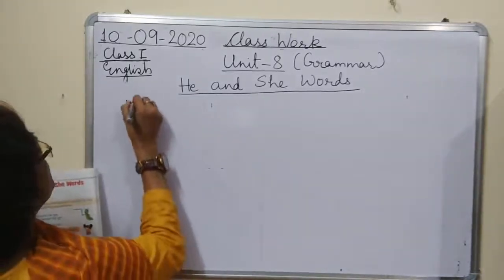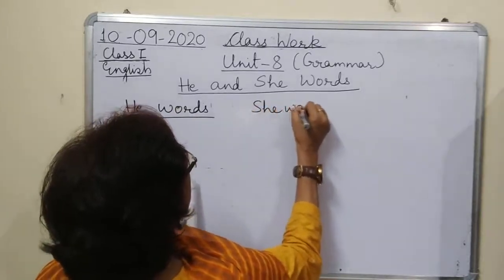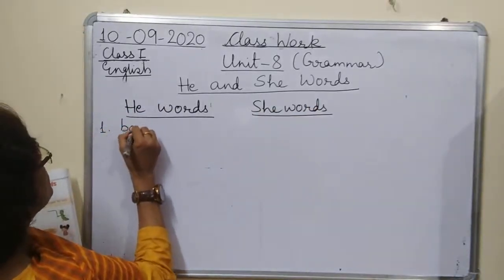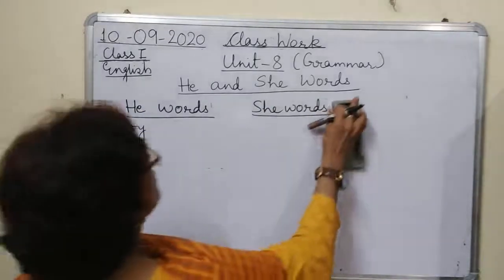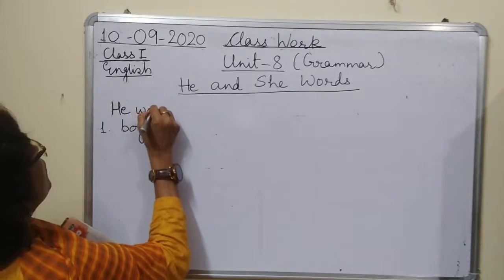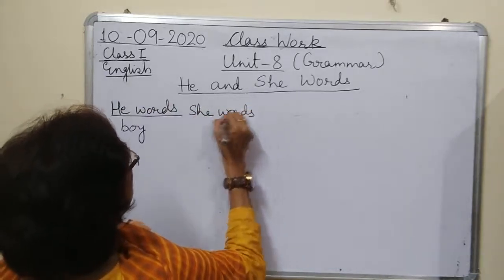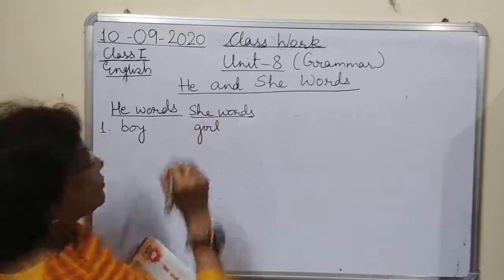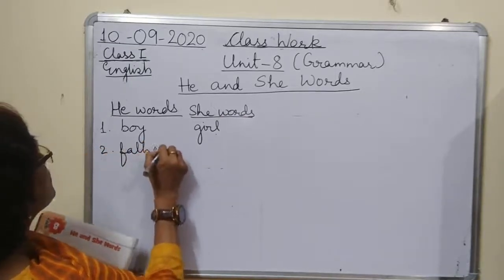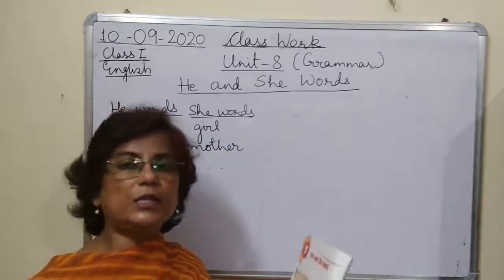Now I will write these words. He words and she words. First: Boy — she word is Girl. Father — she word is Mother. Father is papa, mother is mommy.